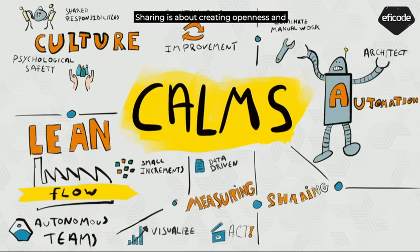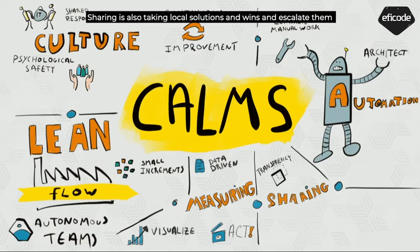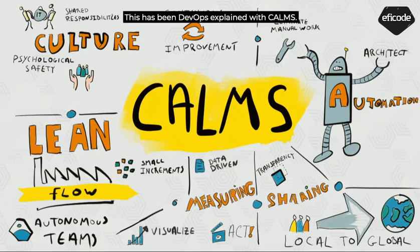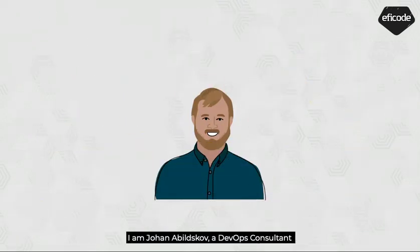The S is for Sharing. Sharing is about creating openness and transparency across the organization chart. Make incentives and goals visible. Sharing is also taking local solutions and wins, and escalating them to the global organization, scaling the benefits vastly. This has been DevOps Explained with CALMS. I am Johan Abelskow, a DevOps Consultant at Efficode, a leading DevOps company in Europe.